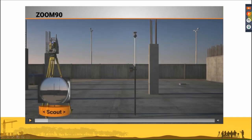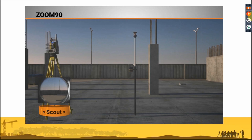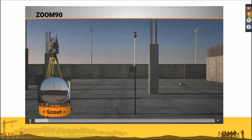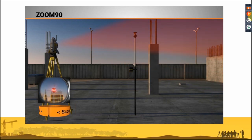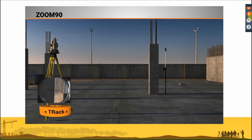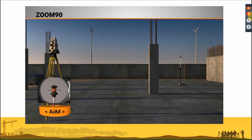In GeoMax, we call this technology STREAM — Scout, Track, and AIM. The Scout is the 360 search, Track is the prism tracking, and AIM is the auto-target for automatic measurement of the center of the prism. First the Scout makes a very fast 360 rotation, then locks the prism and starts tracking. When I measure a point, it uses AIM technology to measure exactly the center of the prism.